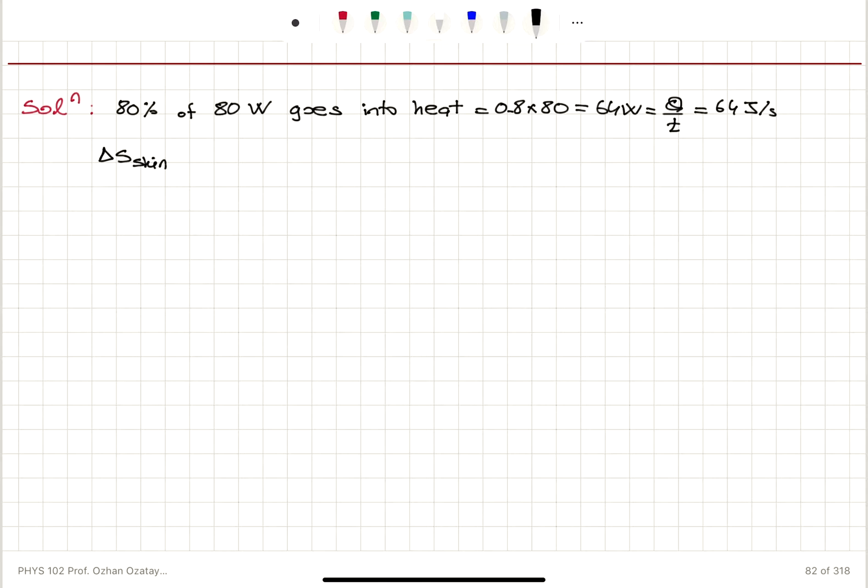The entropy change of the skin per second will be minus 64 divided by the temperature of the skin. The temperature of the skin is 30 degrees Celsius, which is 30 plus 273.15, that is 303.15 Kelvin.